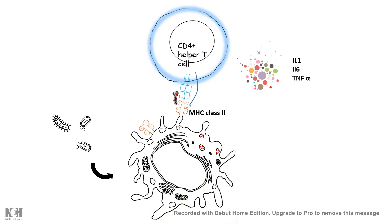These non-specifically activated T cells secrete inflammatory cytokines like IL-1, IL-6, and TNF-alpha, mounting an overall non-specific inflammatory response. From the bacteria's side, this is advantageous — when the immune system is non-specifically active, there is huge confusion in the immune system about what to attack, and the probability that it would selectively attack that particular pathogen is reduced.